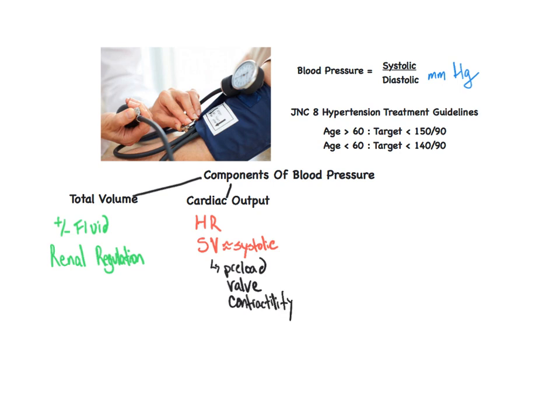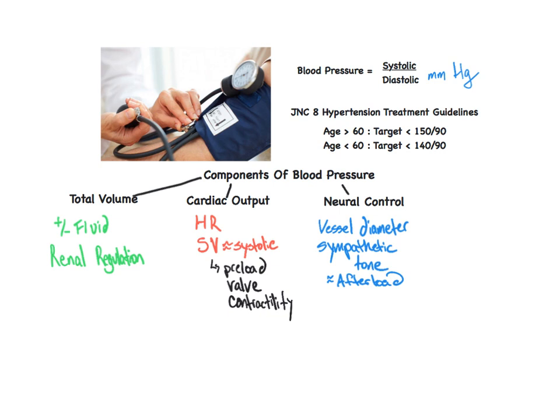The nervous system controls the artery's luminal diameter that the heart works against. The force that the heart must overcome to open the aortic valve is termed the afterload. When blood is ejected from the ventricle, there is resistance to flow. This can be based off of the compliance of the vessel and the viscosity of the blood. The resistance is the major determinant of the diastolic pressure.